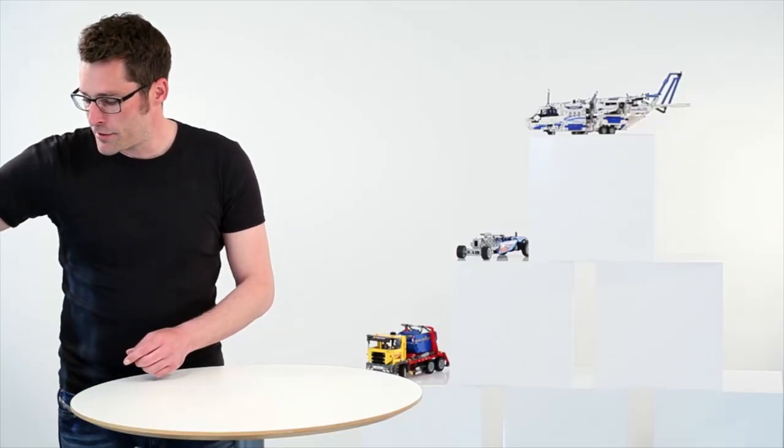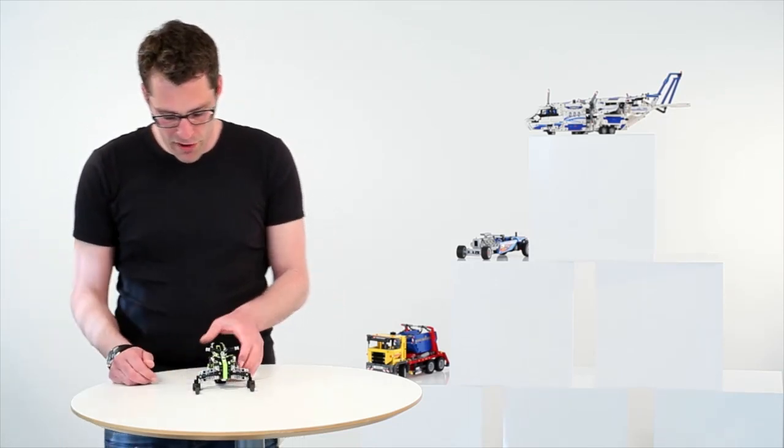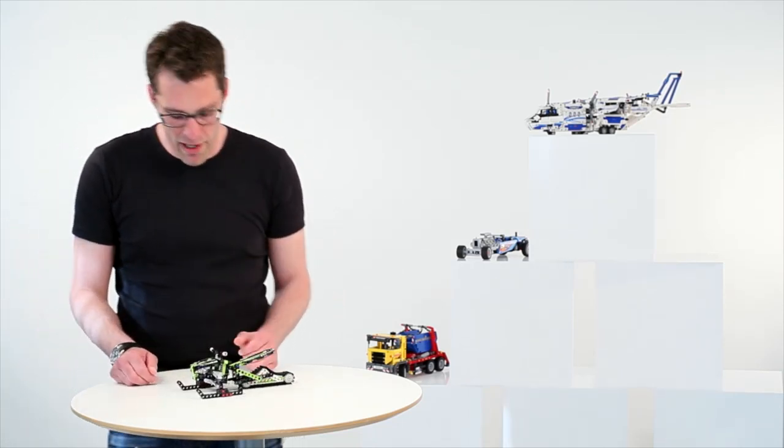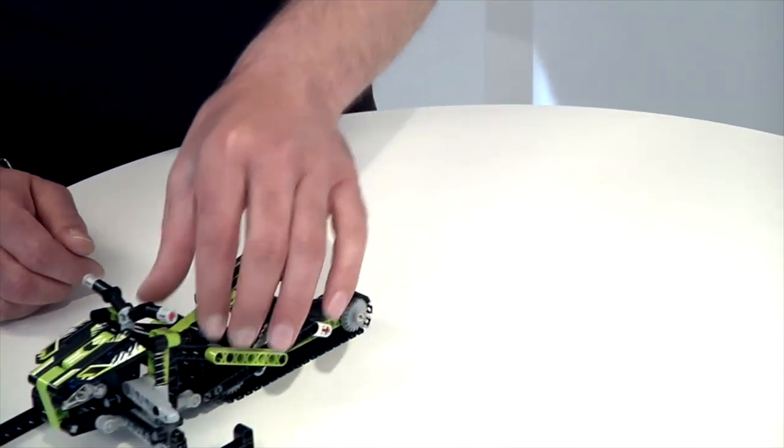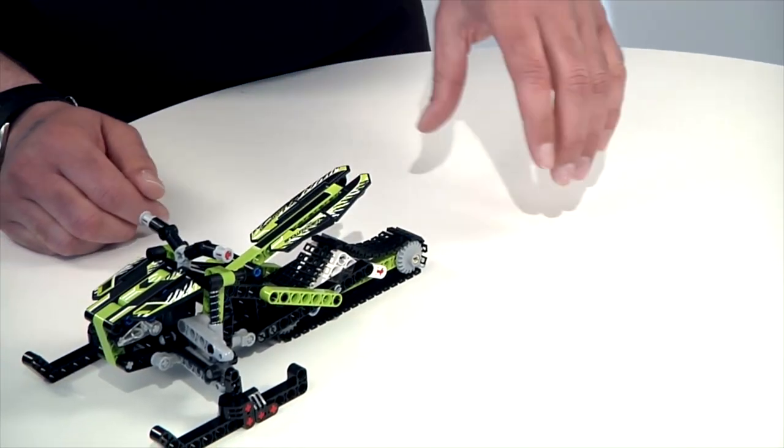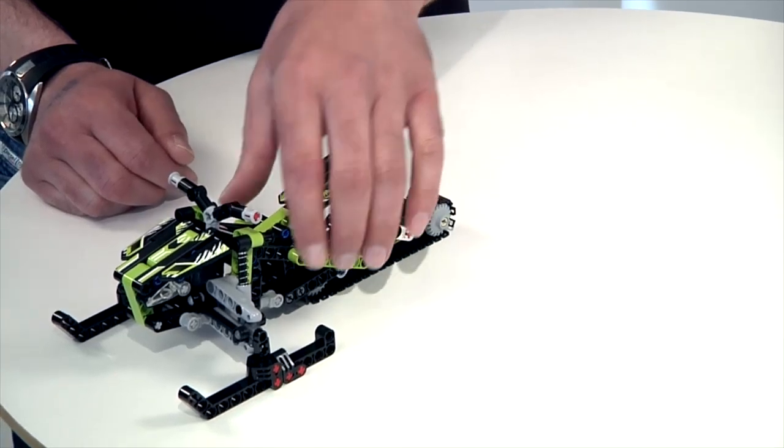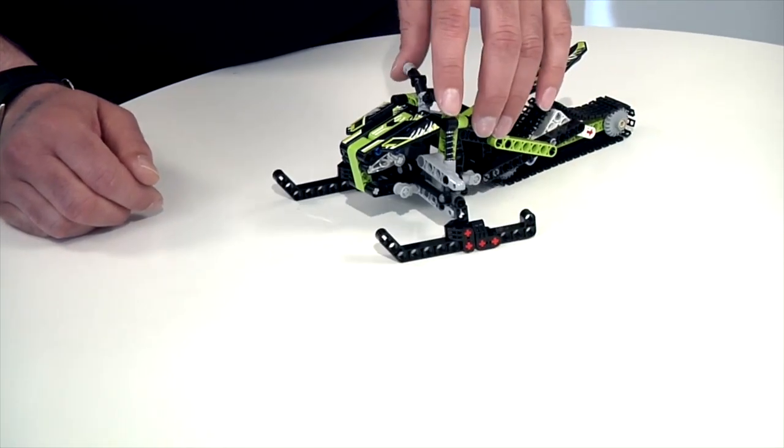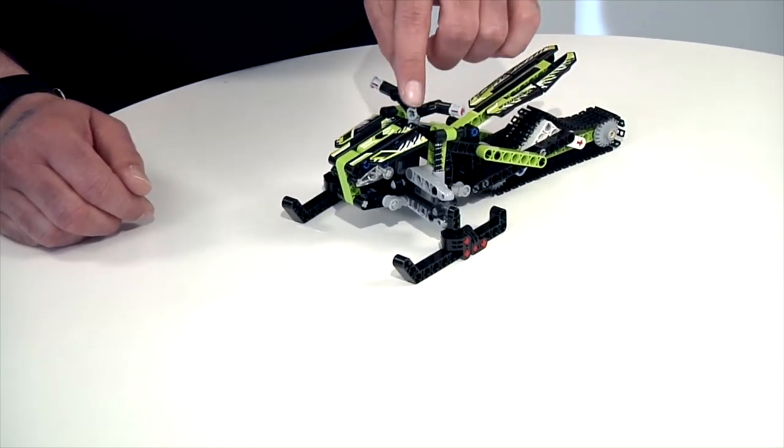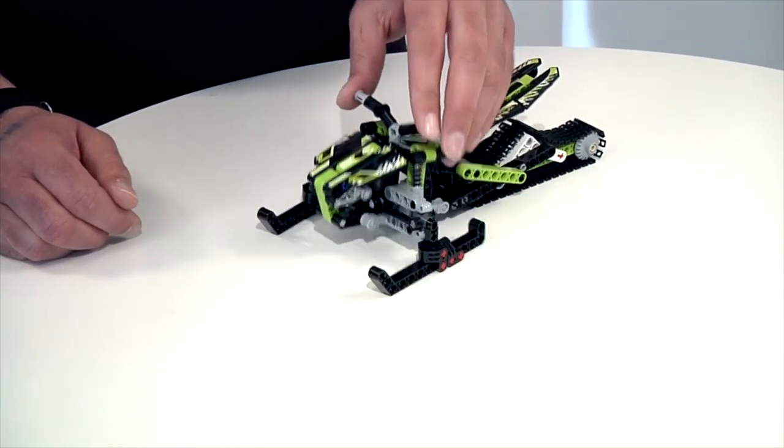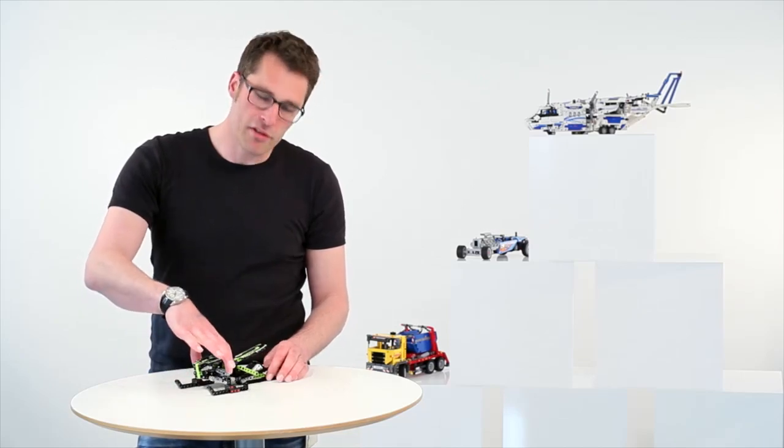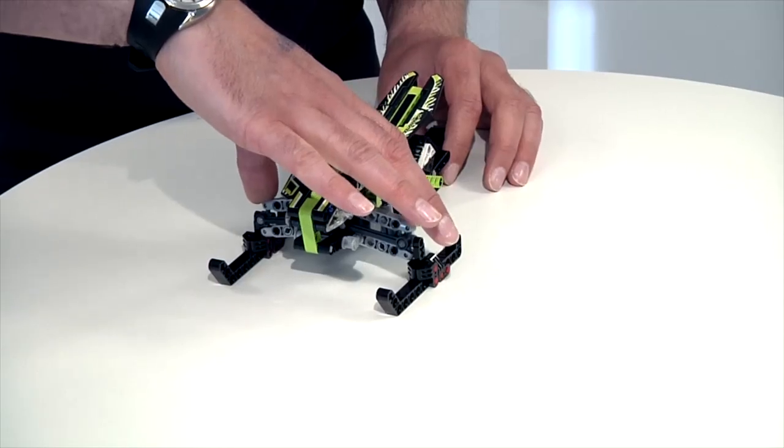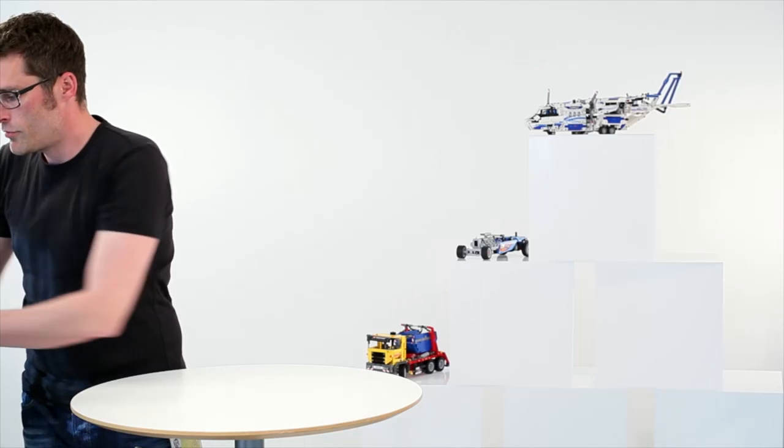Next model is the snowmobile which is this green and black monster. We have the tracks in the back that are really smooth running so that you can play with it on a smooth surface. Then there is a steering system in the front, also with integrated suspension, independent suspension on each side. And this is actually incorporating the new elements that we have developed for our new steering and suspension system.